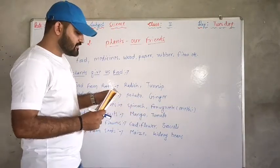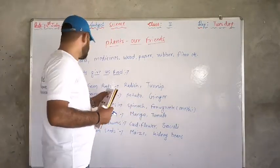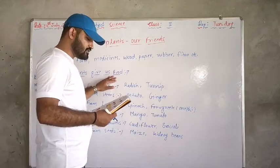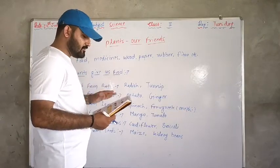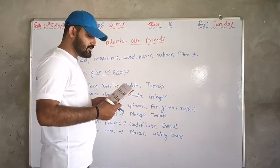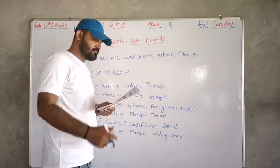Plants give us food. Plants give us bojan (food). Most of the food we eat comes from plants.